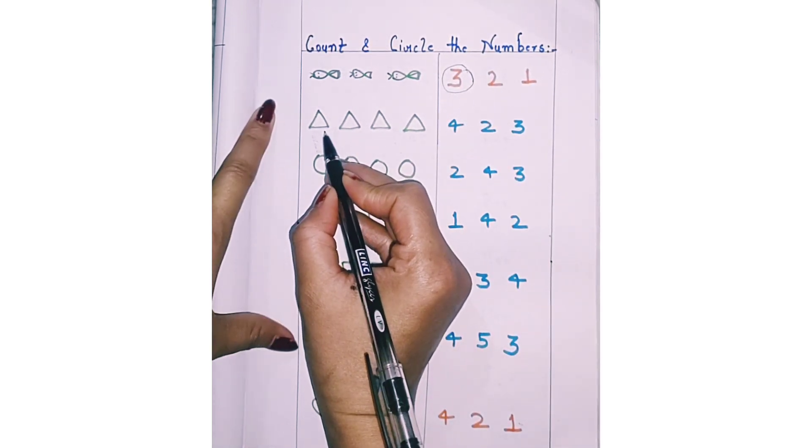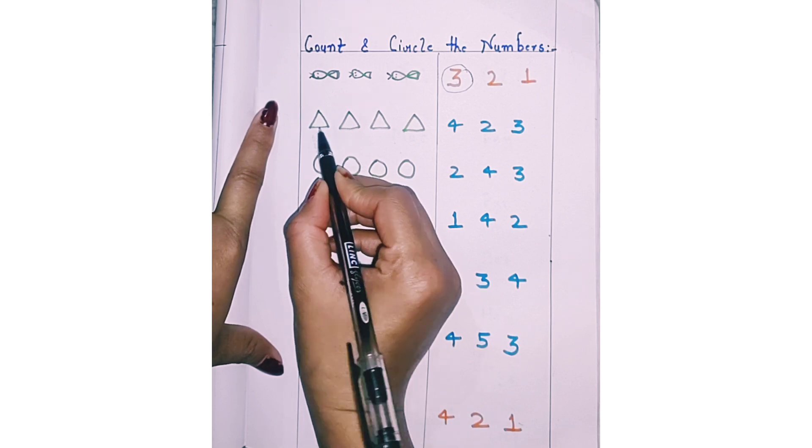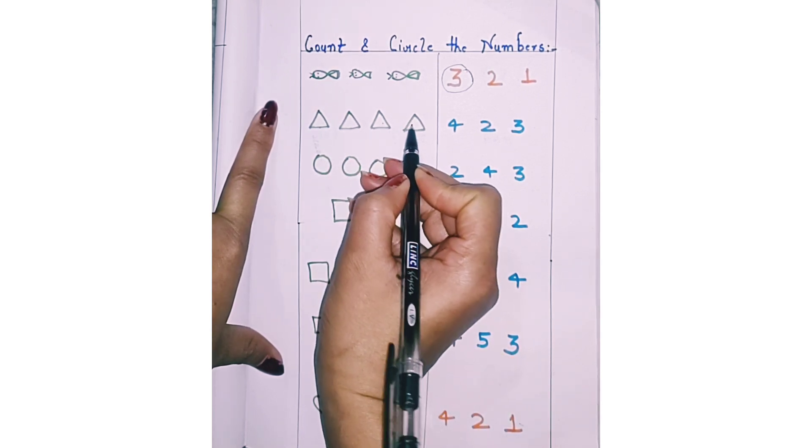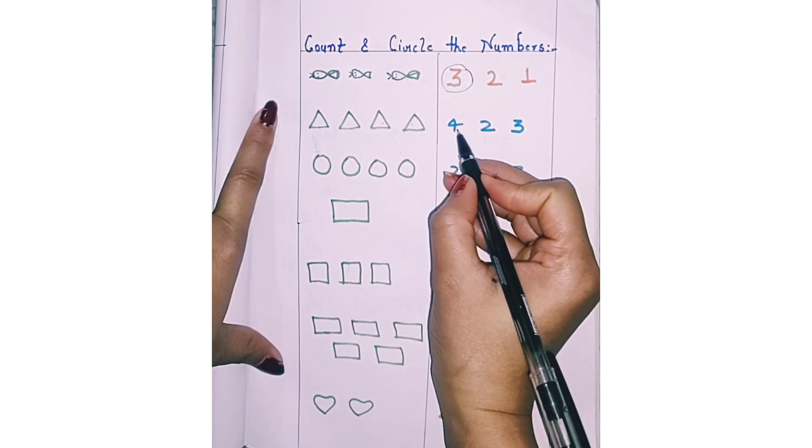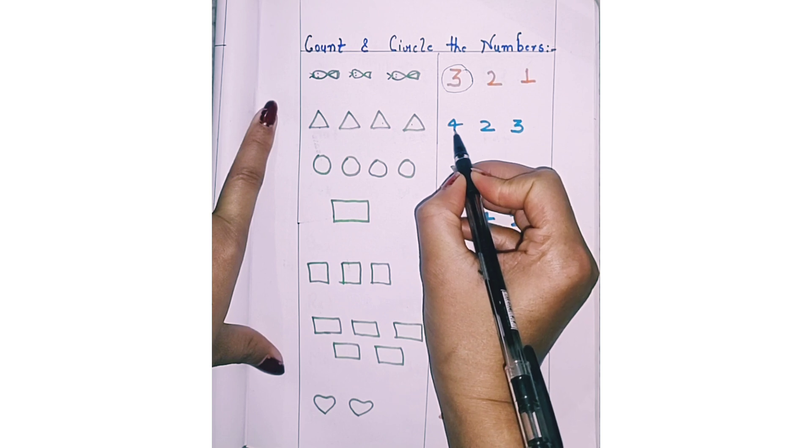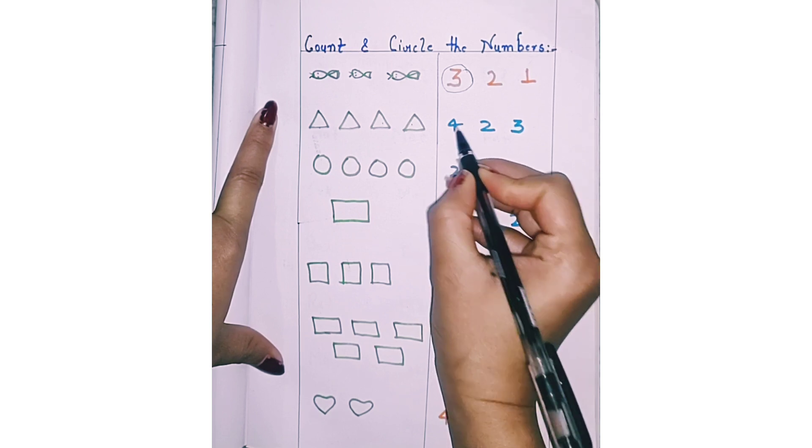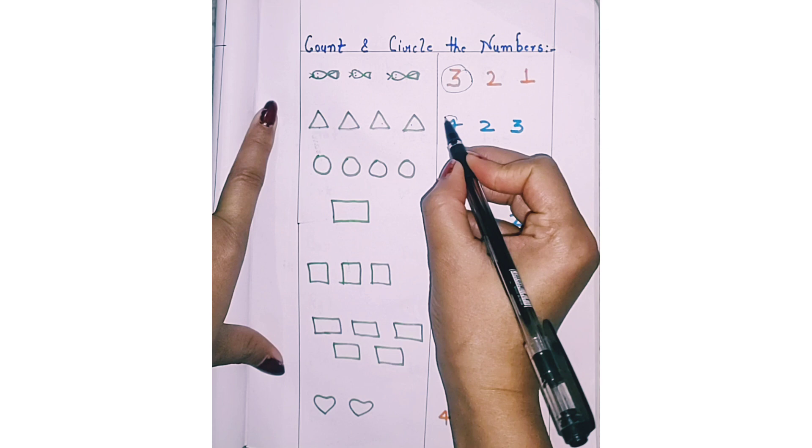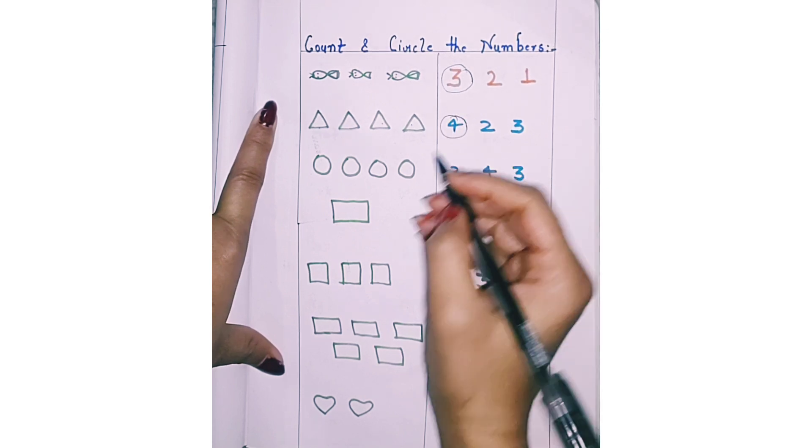Next. How many triangles are there? Count with me. 1, 2, 3, 4. Circle 4. Find where is 4. 4, 2, 3. Circle 4.